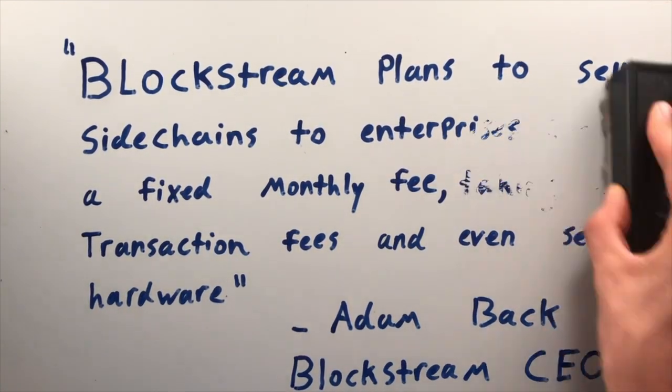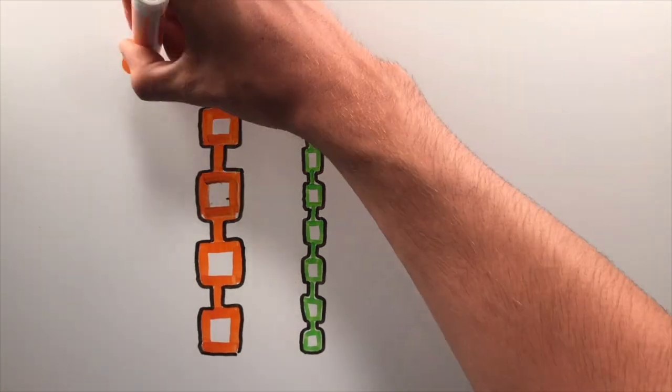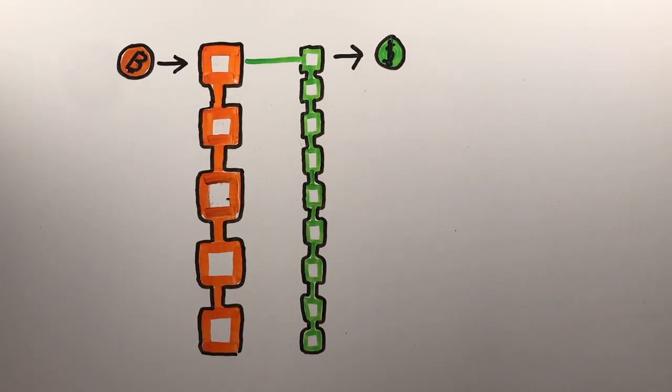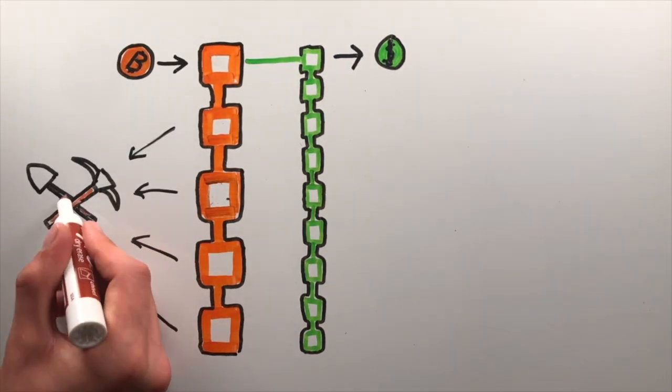Sidechains are a separate blockchain that is pegged to Bitcoin's value. You send one Bitcoin to a smart contract and receive a new coin on the sidechain. Coins on the sidechain can differ from Bitcoin in just about any way. They can have better smart contract capabilities, offer instant transactions, or anonymity features.